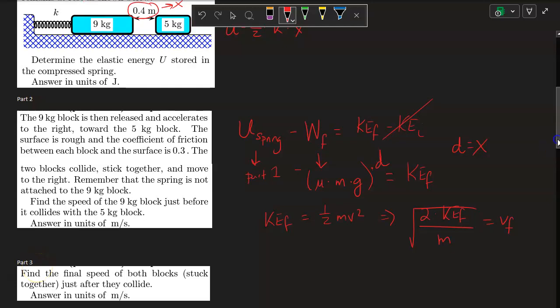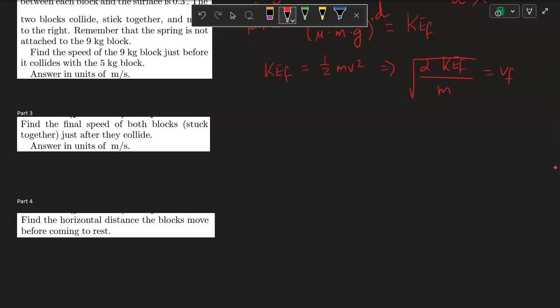Okay, for part 3, find the final speed of both blocks stuck together just after they collide. So block 1 is coming in, that's the 9 kilograms or whatever the most left block is. It's coming in with this initial velocity. This is now the velocity from part 2.